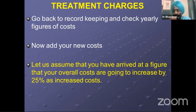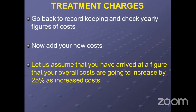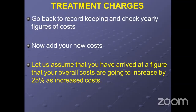Considering various revenue scenarios — 75% revenue with a 25% drop, or two-thirds, or 50% — all are likely possibilities for the next two months. Even after we resume AGPs, these figures apply. I'm not talking about the consultation period where we're only dealing with emergencies. So how do we decide the raise? Do we make a raise in all services of the clinic? My answer is a big no. Because it is the age of smartness and we ought to exert some smartness in our way of working.